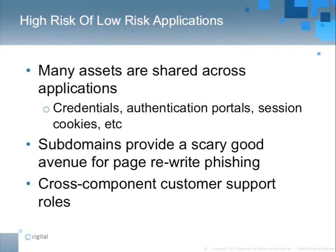The high risk of low-risk applications: obviously you have shared assets, and a lot of times subdomains also provide a very good avenue because people see the domain they're ultimately hoping to land on in the URL. A lot of people say to prevent phishing attacks, look at the URL — that will tell you if it's not a phishing attack. They're wrong. This offers a very good avenue for page rewrite phishing attacks. Cross-component customer support roles are also pretty big — if you can call into one call center and get through one vulnerable process on one low-risk app, and it affects a high-risk app, then you've won.